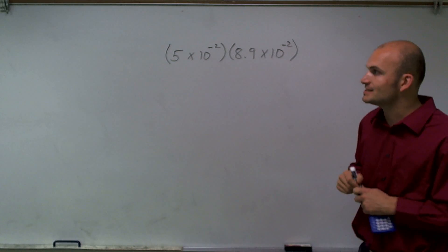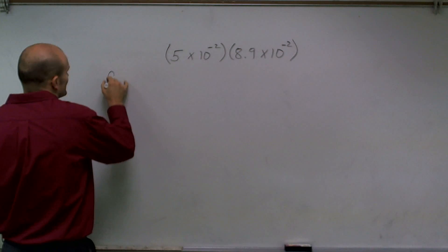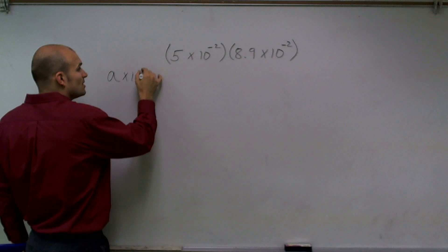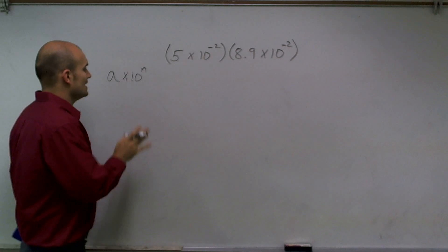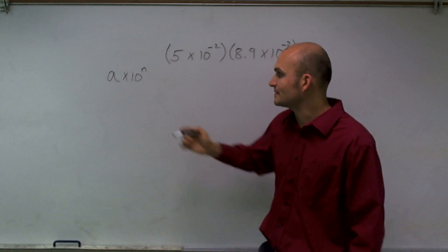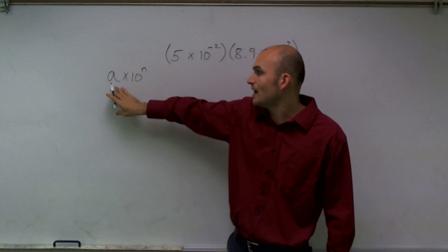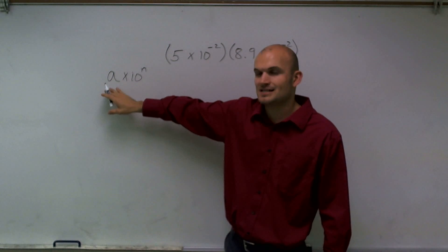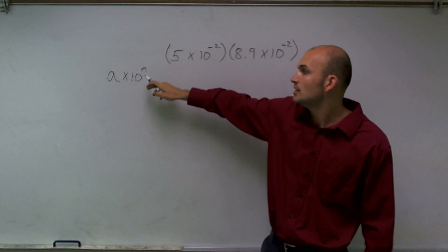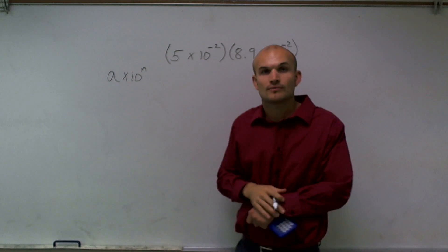A couple things I want to remind you about scientific notation: scientific notation is how we like to write very big or very small numbers in terms of a base 10. What's really helpful about this is there's a couple of rules we're going to follow. One is our a has to be between 1 and 10, and then we're going to write it times 10 to a power that has to be an integer, which is our n.